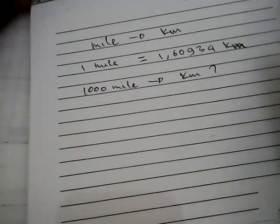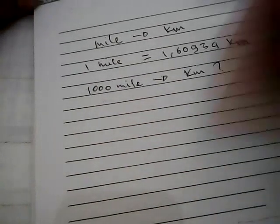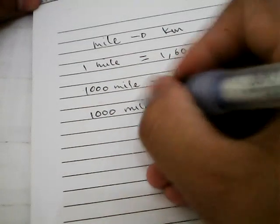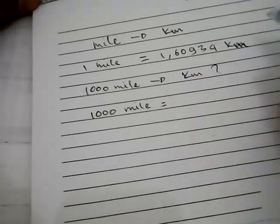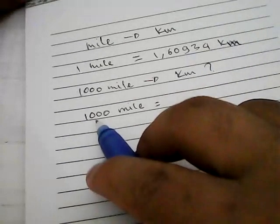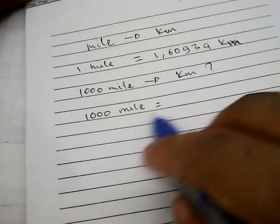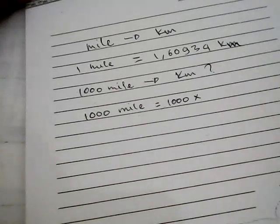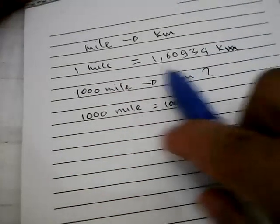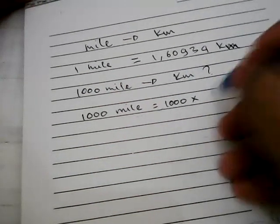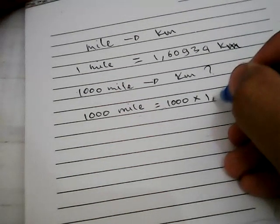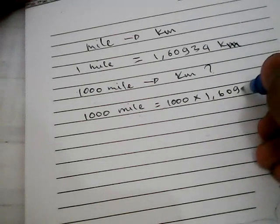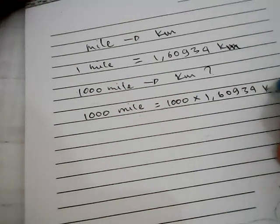So in the first step, you need to write 1,000 miles and equal sign. Then you need to put this 1,000 over here too. 1,000 multiplied with this number, 1.60934 kilometers.